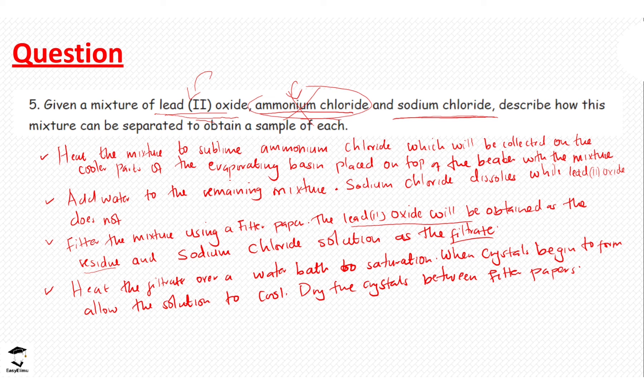In conclusion, we obtained the ammonium chloride by sublimation, the lead(II) oxide by filtration from the sodium chloride solution, and the sodium chloride crystals by crystallization. This ends the question and today's discussion. In our next lesson we are going to look at simple distillation — how we separate liquid-liquid mixtures. See you in the next lesson.